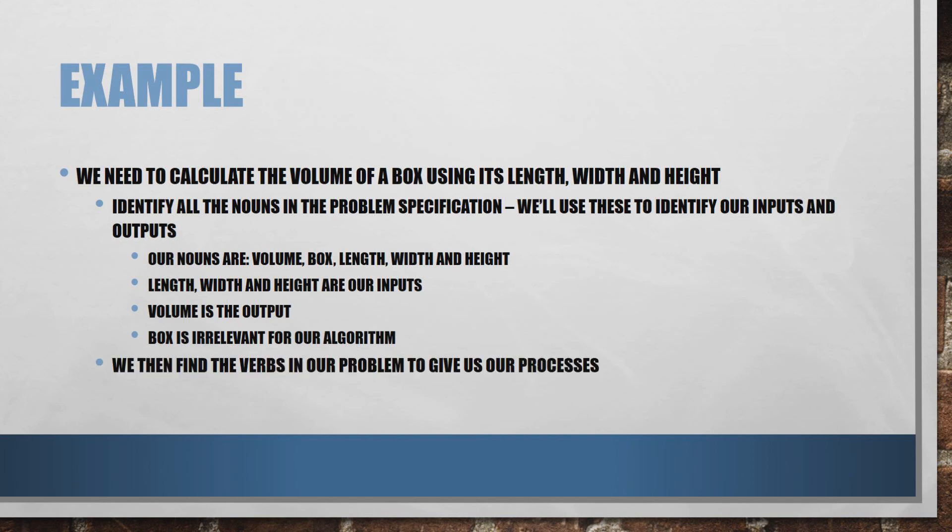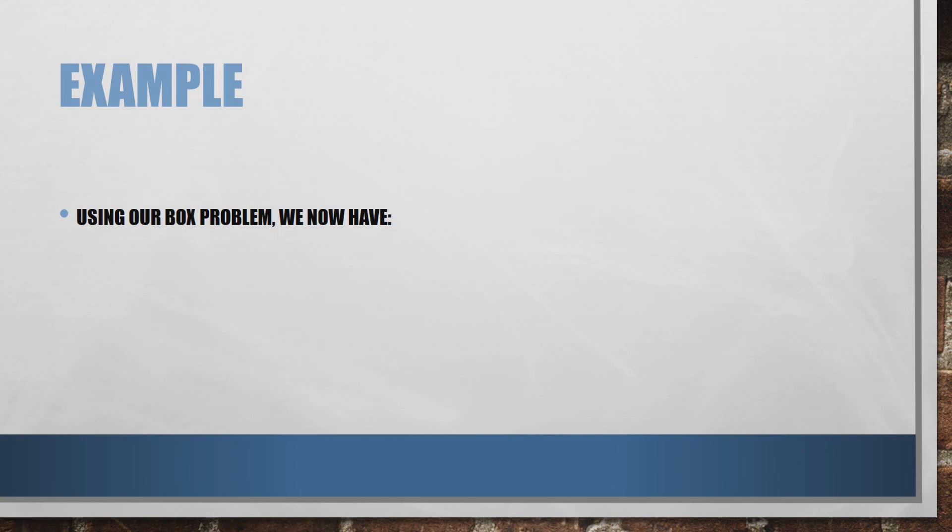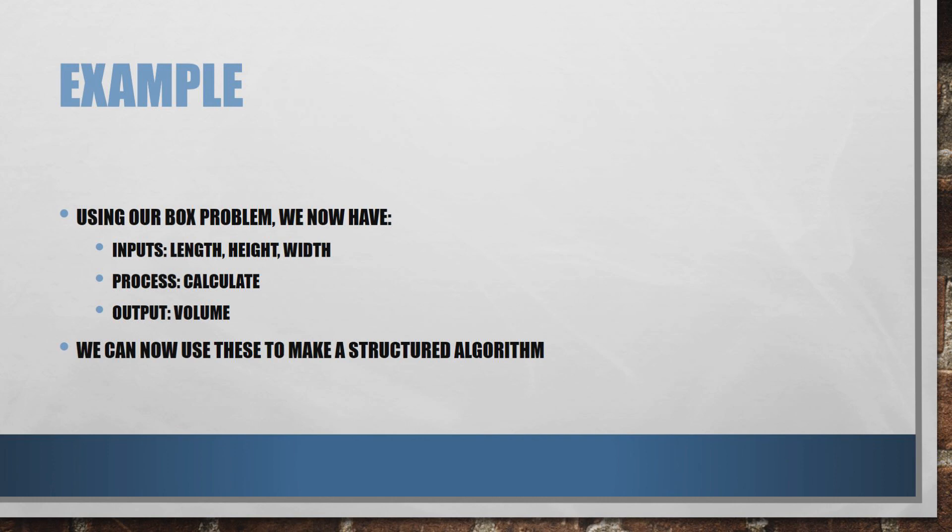We then find the verbs in our problem. And by finding the verbs, we find out what our processes are. So in this example, calculate is our process. So using that box problem, we now know that our inputs are length, height and width. Our process is going to be calculate and our output is volume. And then we can use all of this information to help us make a structured algorithm. But more on that in a future video.